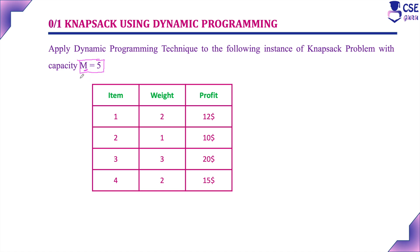This m represents the maximum capacity of the knapsack. Before discussing the problem, you need to understand what the knapsack problem is and the concept of implementing it using dynamic programming. I will provide the link in the description for your reference. Here m is the maximum capacity of the knapsack. They have given 4 items represented by i, so the number of objects is equal to 4.